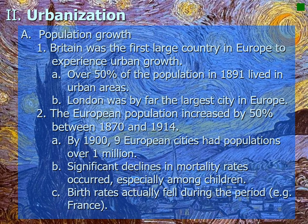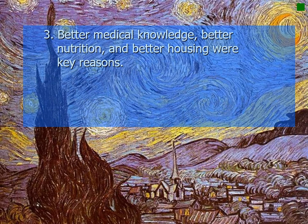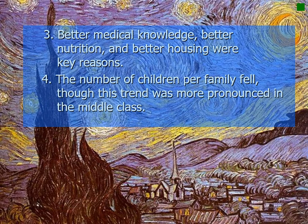Significant declines in mortality rates occurred, especially among children. Birth rates actually fell during this period — in France, for example — partly due to new birth control methods being experimented with. Better medical knowledge, better nutrition, and better housing were also key reasons. The number of children per family fell, though this trend was more pronounced in the middle class than anywhere else.